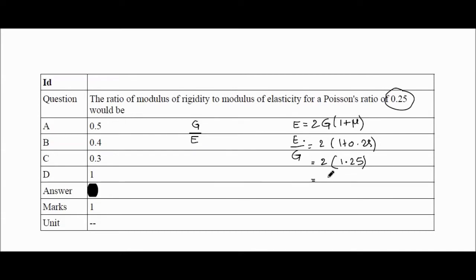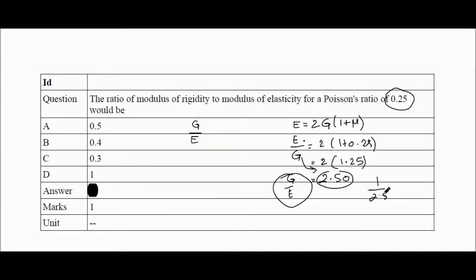Calculating E/G gives 2.50. But the question asks for G/E, so take the reciprocal: 1/2.5 = 0.4. So the correct answer is 0.4, and the answer is B.